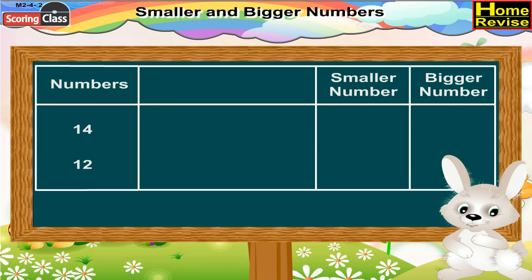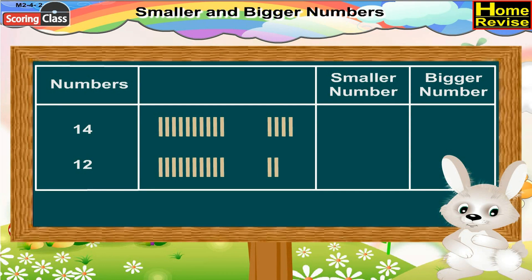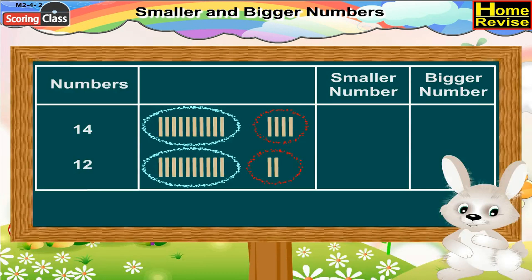Now, 14 and 12. Draw 14 lines for number 14 and 12 lines for number 12. Count 10 lines in each number and encircle them. Now that you have created a group of 10 in each number, let us see how many lines remain. In 14, 4 lines remain. In number 12, 2 lines remain. Now, 14 is bigger than 12. So, number 12 is a smaller number and number 14 is a bigger number.